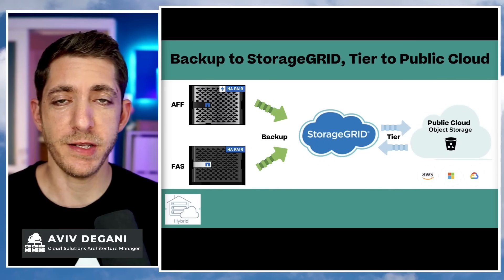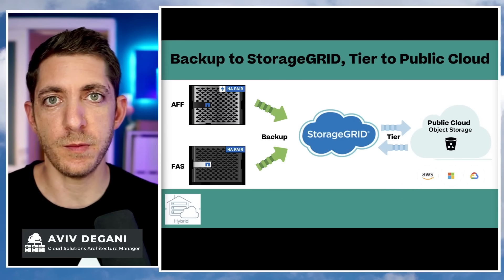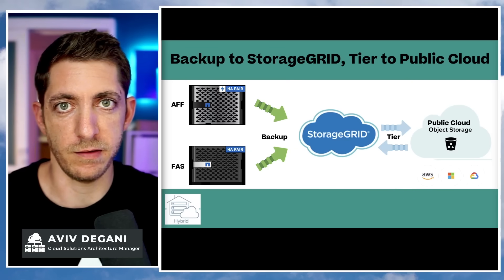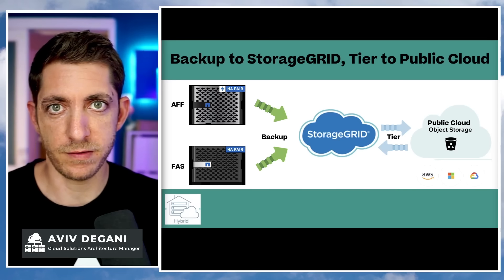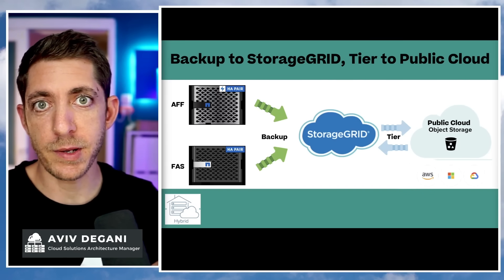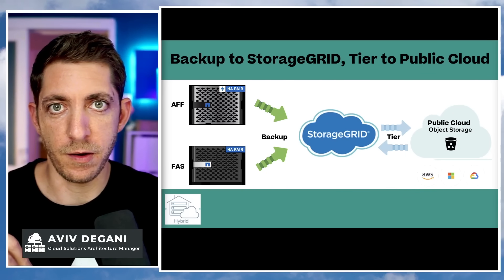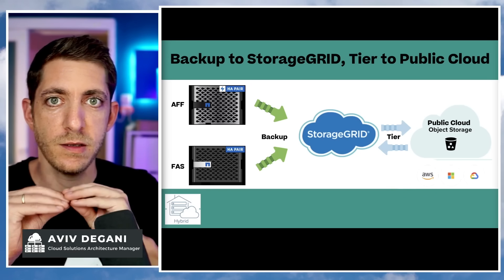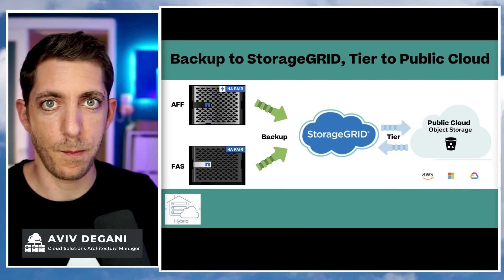Some of our customers have pretty extreme backup retention. Take mortgages as an example — they need to keep the data for 30 years. No one wants to keep that data on-premises for 30 years or manage it in their data center. Now they have an amazing solution: you can take your AFF data or FAS data, protect it using Cloud Backup to StorageGRID for one year, and then enable tiering from that StorageGRID to the public cloud of their choice. Cloud Backup and ONTAP will manage which objects can be tiered and which ones cannot, to manage backup consistency across shorter and longer retention periods — like magic.